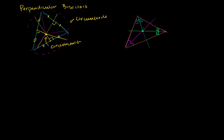So if you drop a perpendicular to each of the sides, this distance is going to be equal to that distance, which is going to be equal to that distance. Because of that, we can draw a circle that is tangent to the sides — it has this radius. We could draw a circle that looks like this, and we call this circle, because it's kind of inside the triangle, the in-circle. And this point, which is the intersection of these angle bisectors, we call the incenter.